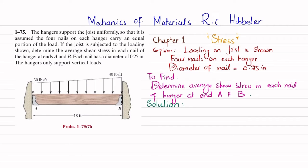Let's start with the solution. If we remove the hanger support at end A, we have a reaction force F_A, and if we remove the hanger support at B, we have a reaction force F_B. We will find F_A and F_B using the equations of equilibrium.